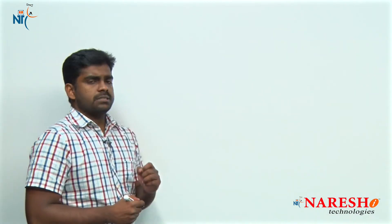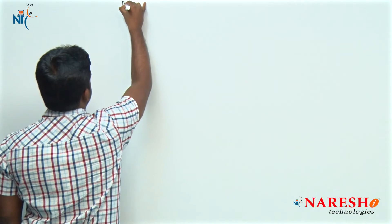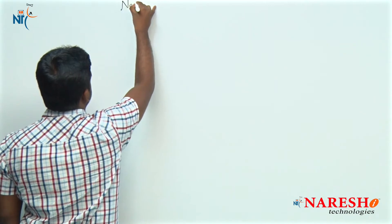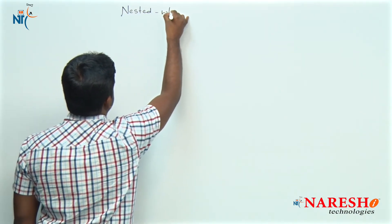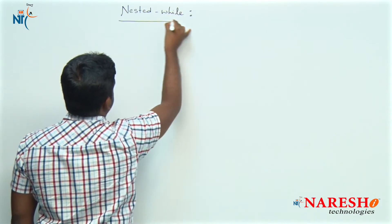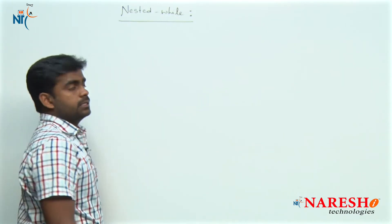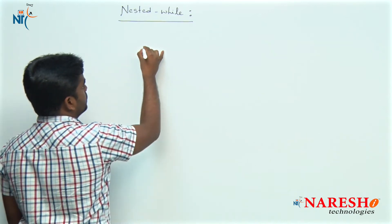First of all, what is a nested while loop? It means defining a while loop inside another while loop. So, as a nested while loop syntax — nested while — means defining a while loop inside another while loop.